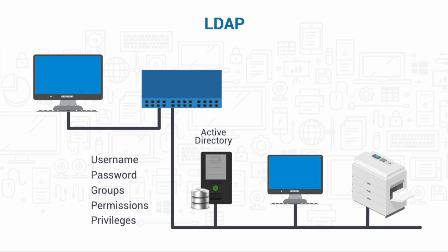To be compliant with the LDAP protocol, data must be stored using a standard method. For example, each database entry must be an object with specific attributes. This structure helps ensure that a directory can be easily accessed and the desired information can be found. To obtain access to the network, Active Directory and the client must speak the same language — this is where LDAP comes in. The client sends a request with required credentials to Active Directory, which compares them to the information in the database. If the information matches, the request is authorized and the client is connected to the appropriate network resources.